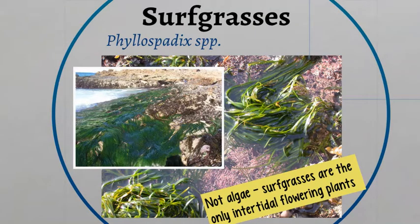Surf grasses are the only true flowering plant found in the rocky intertidal. They get the name surf grass because they look just like blades of grass. Their blades are long and narrow and often bright green. They are found in the low tide zone and often in channels. Usually you do not see surf grasses unless we have extreme low tides, and they also provide a lot of habitat for many different intertidal species.